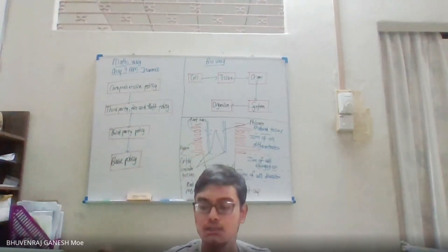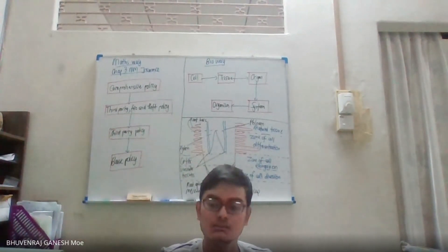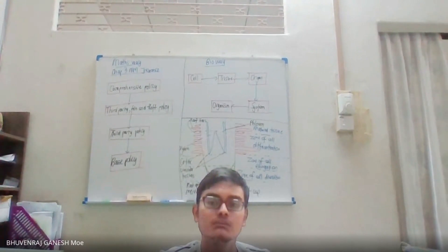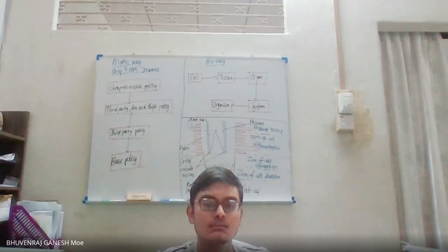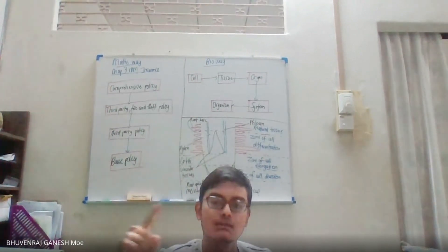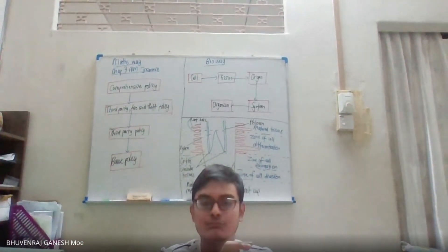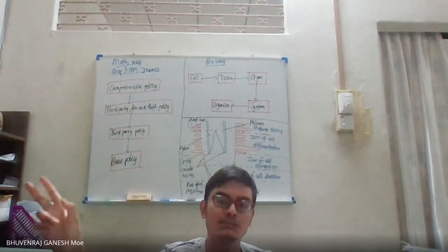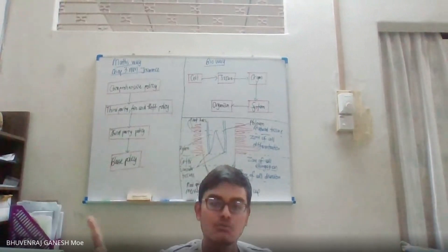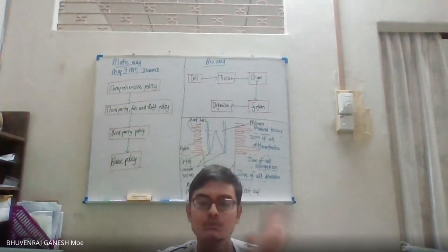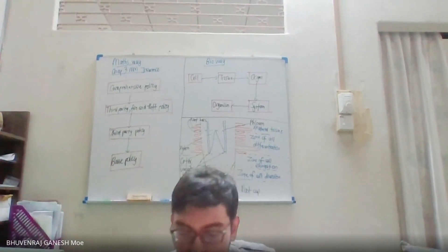Whenever you see the idea of limits and there's a square root involved, you need to use your conjugate knowledge from Chapter 4. If the expression is, say, √5 minus 3, you multiply by √5 plus 3 over √5 plus 3 — because whatever you multiply must equal one, so you don't change the overall structure of the equation.